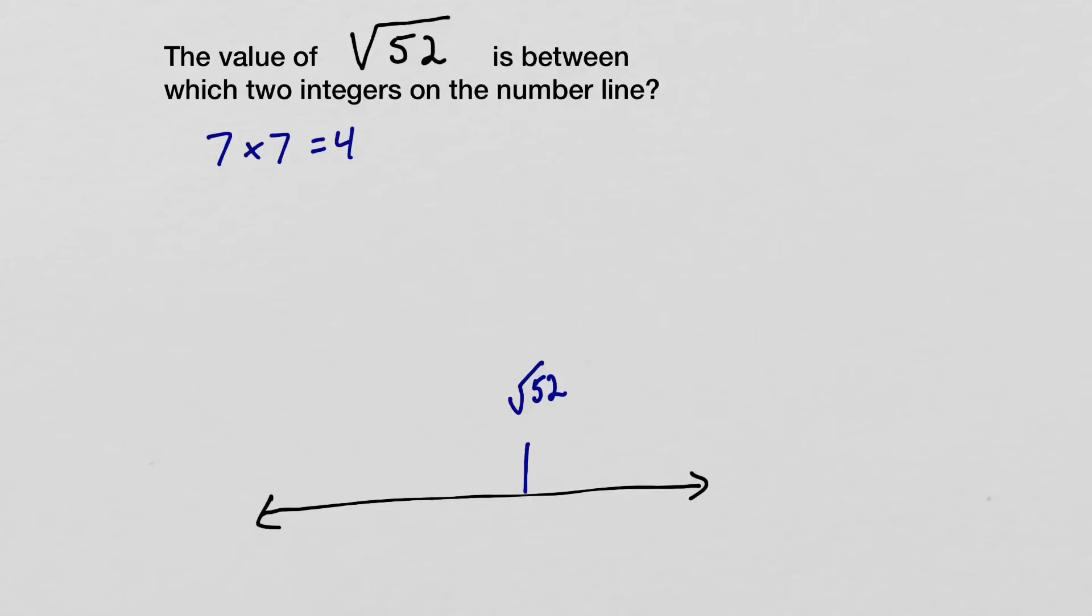So 7 times 7 equals 49. In other words, the square root of 49 equals 7. Okay, the square root of 49 is definitely less than the square root of 52, and it's pretty close.